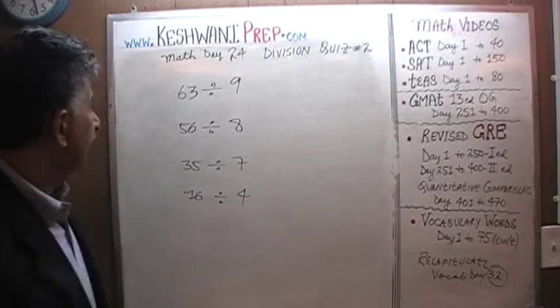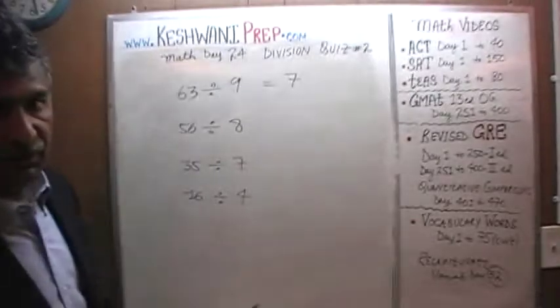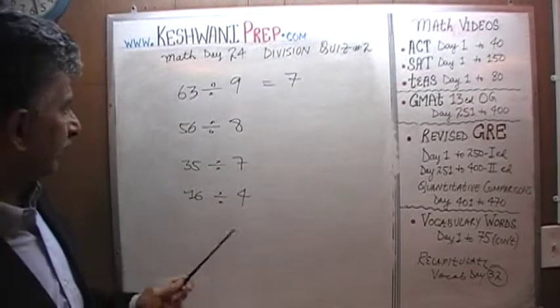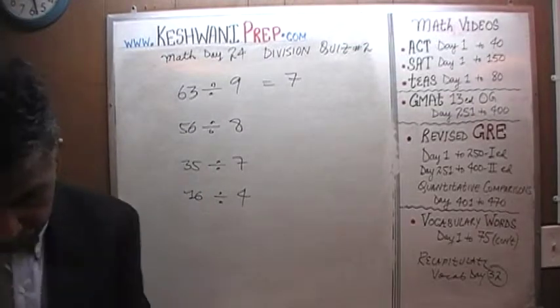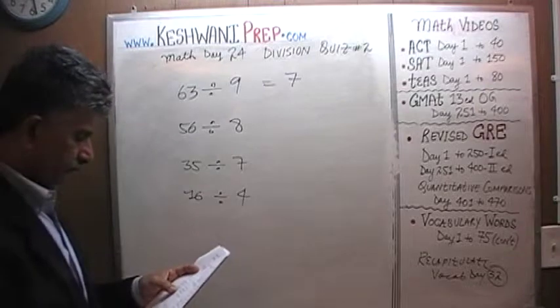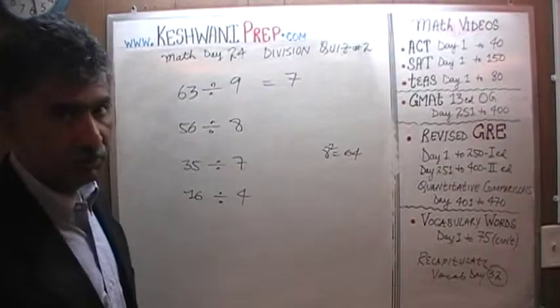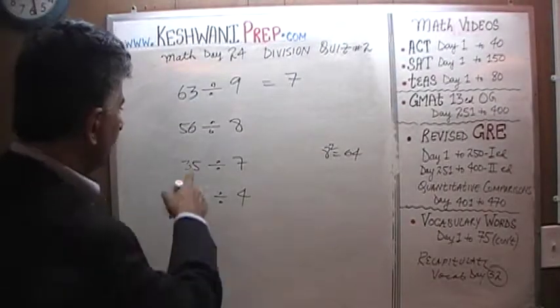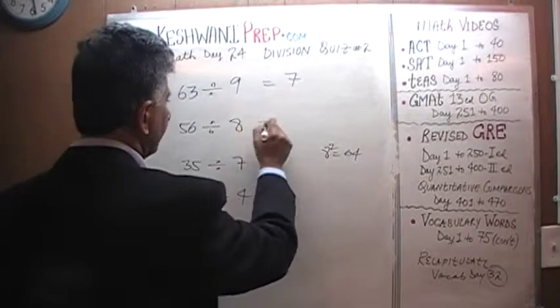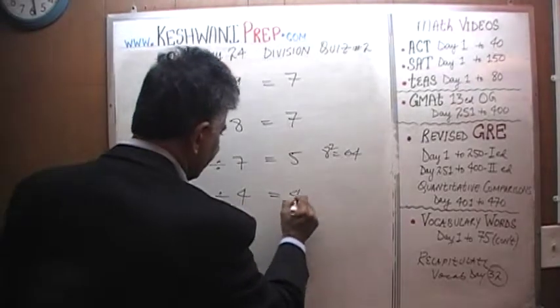Very quickly. 63 divided by 9 is going to be 7, because 7 nines are 63. If we add one more 9 to 63 we get 72, which is 10 nines. 56 divided by 8. 8 squared is 64. 56 is 8 less than that, which means this is 7 eights. 7 fives are 35. And 16 divided by 4 is just going to be 4.